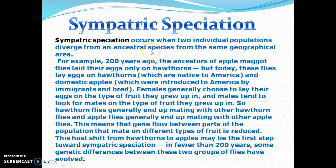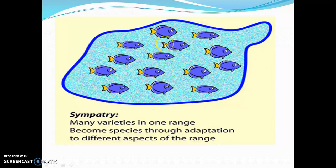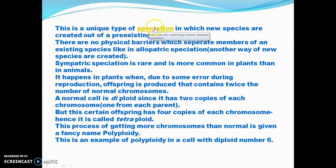This is sympatric speciation where there is the same geographical area — 'sym' suggests same. In this diagram you can see many varieties within one range becoming species through adaptation to different aspects of that range. It is a unique type of speciation in which new species are created out of pre-existing species, and there are no physical barriers separating members of an existing species, unlike in allopatric speciation.